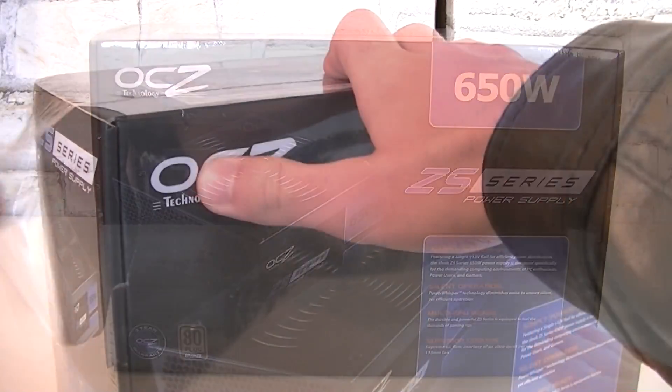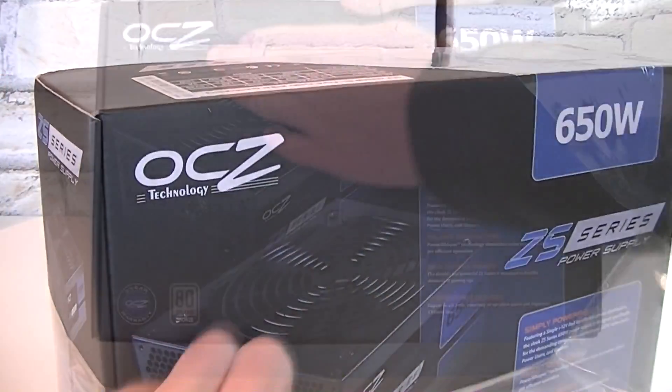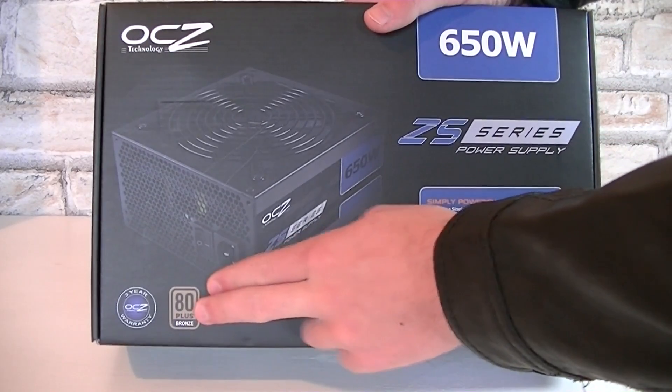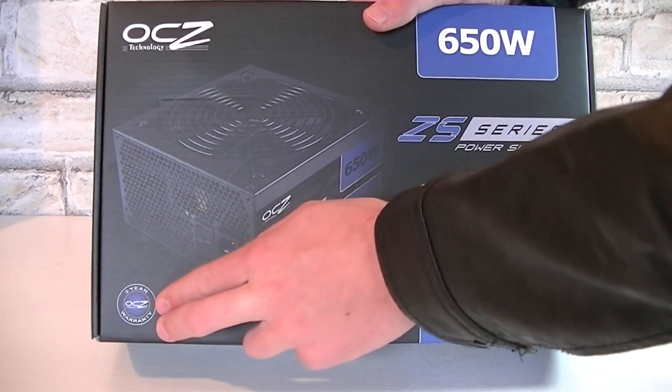Alright, here's the box. At first I'll take off the plastic that's on the box. Good, once again we're looking at the OCZ ZS Series 650W Power Supply which is 80 Plus Bronze Certified and comes with a 3 year warranty.